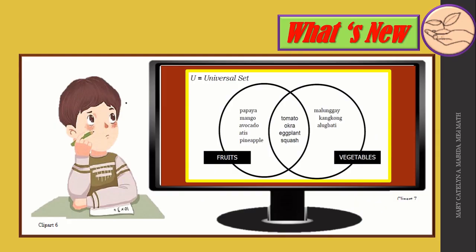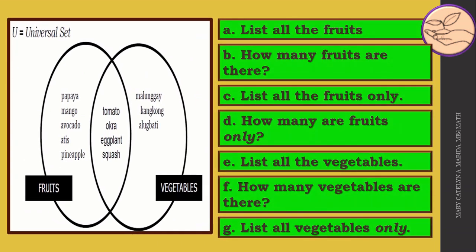Given our universal set which contains the fruits: papaya, mango, avocado, atis, pineapple, tomato, okra, eggplant, squash, and vegetables: tomato, okra, eggplant, squash, malungay, kangkong, and alugbati. Let us answer the following questions. Now I want you to get a separate sheet of paper to list down your answers.